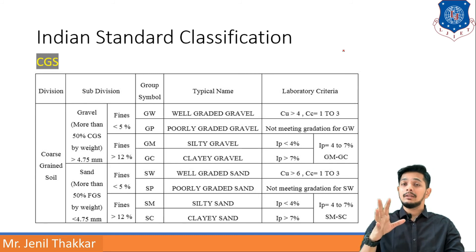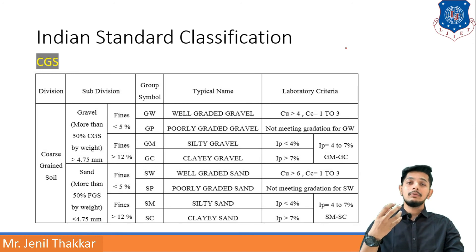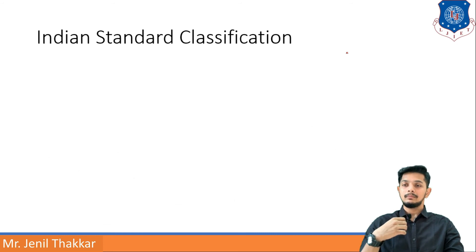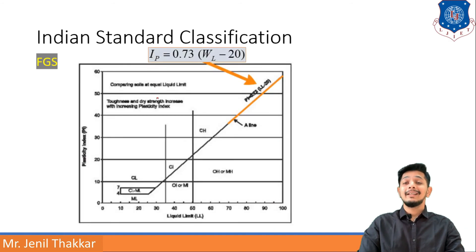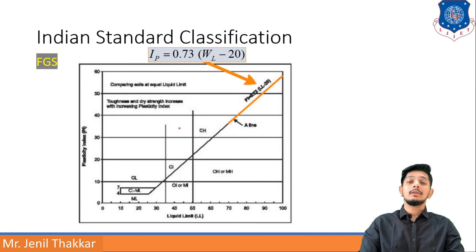Previously we understood particle size classification according to IS code. Now we will learn about fine grained soil (FGS). For fine grained soils there is a graph also known as the IP A-line graph, which plots plasticity index (IP) versus liquid limit (WL). This graph divides soils into 9 types.